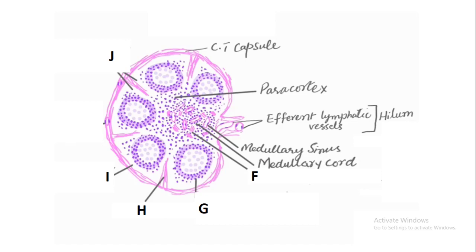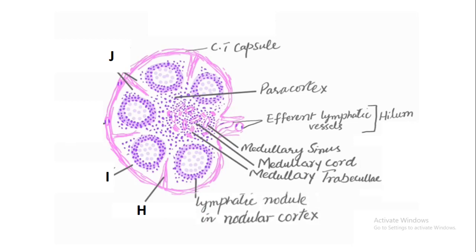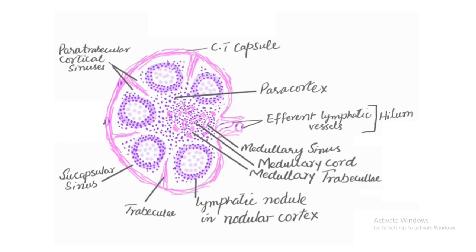C is the medullary cord. F is the medullary trabecula. G is the lymphatic nodules in the nodular cortex. H is the trabecula. I is the subcapsular sinus, and J is the capsule. Please make sure that you know how to label the lymph node and that you are able to label all these structures.